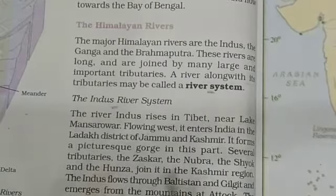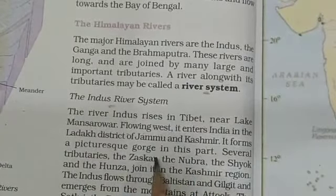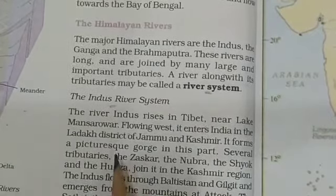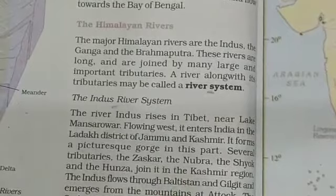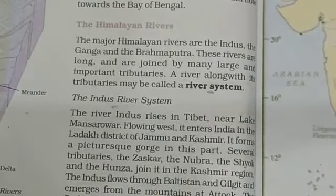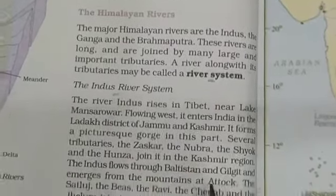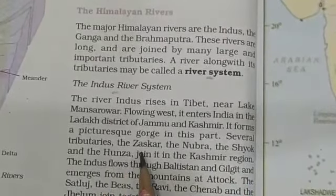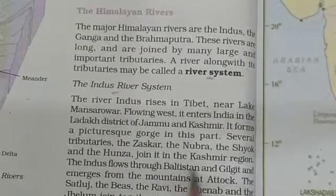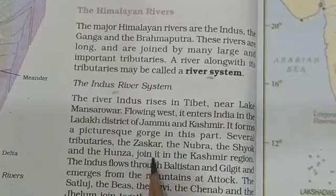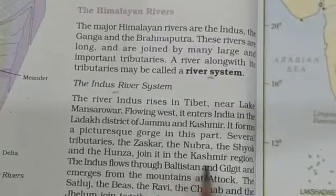Here the Indus forms a beautiful gorge. A gorge is formed when a river carves its way through mountains. Several tributaries — the Zanskar, the Nubra, the Shyok, and the Hunza — join it in the Kashmir region.